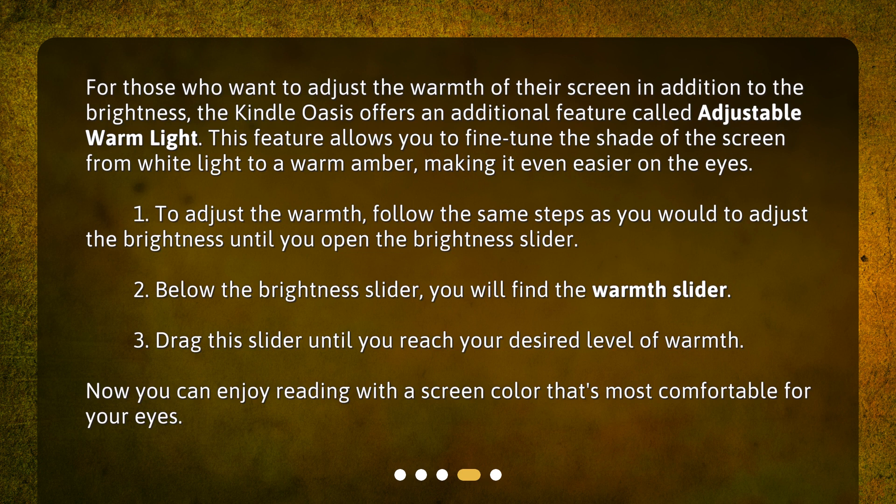1. To adjust the warmth, follow the same steps as you would to adjust the brightness until you open the brightness slider. 2. Below the brightness slider, you will find the warmth slider. 3. Drag this slider until you reach your desired level of warmth. Now you can enjoy reading with a screen color that's most comfortable for your eyes.